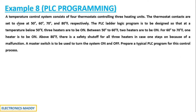The thermostat contacts are set to close at 50, 60, 70, and 80 degrees Fahrenheit respectively. The PLC ladder logic program is to be designed so that at a temperature below 50°F, three heaters are to be on. Between 50 to 60 degrees, two heaters are to be on. For 60 to 70 degrees, one heater is to be on. Above 80°F, there is a safety shutoff for all three heaters in case one stays on because of a malfunction. A master switch is to be used to turn the system on and off.